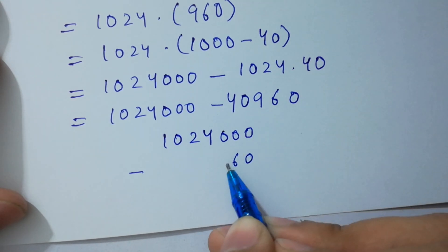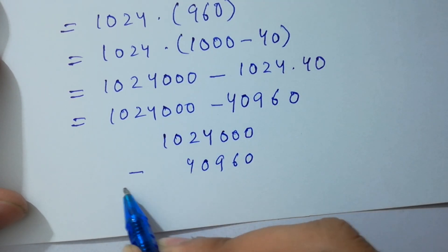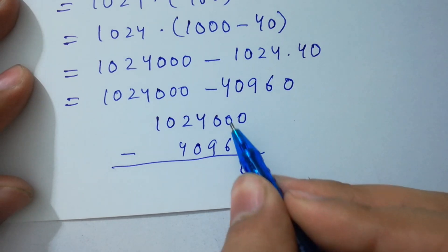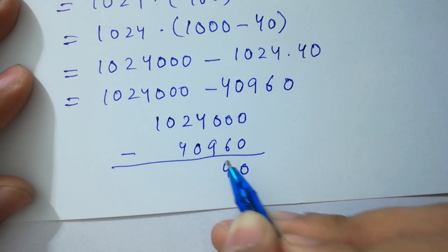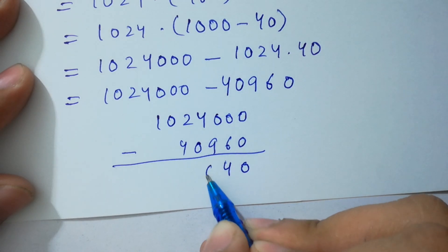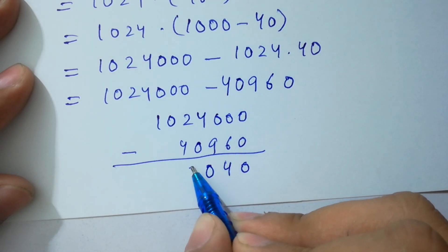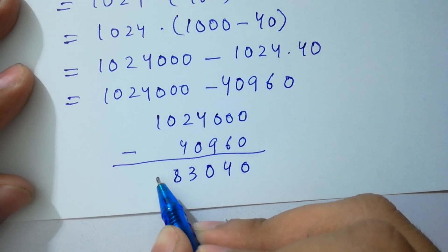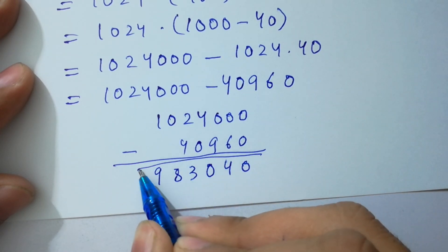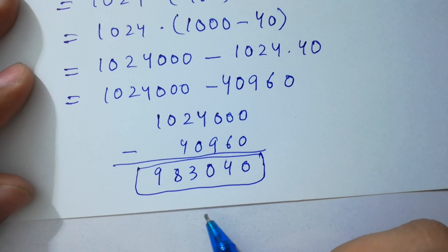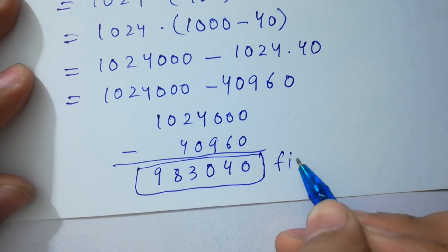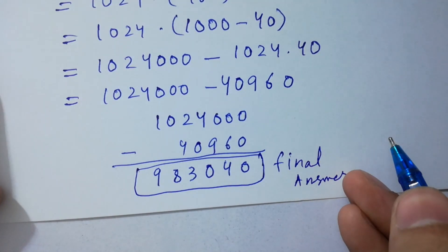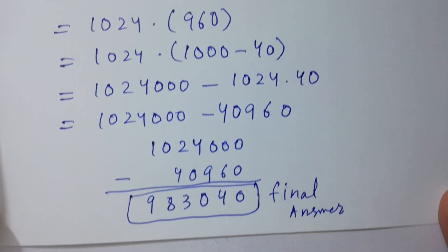The next step is very simple: 1024 with three zeros minus 40960. If we subtract here, we have 0 minus 0 is 0, 10 minus 6 is 4, 9 minus 9 is 0, 3 minus 0 is 3, 12 minus 4 is 8, and we have 9. So 983040 is our final answer.